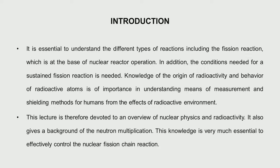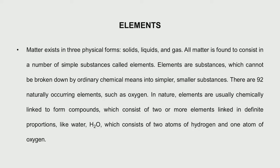All of us know that matter exists in three physical forms: solid, liquid, and gas. All matter consists of different substances called elements. For example, air contains oxygen and nitrogen — nitrogen is an element, oxygen is an element. Elements are substances which cannot be broken further into simpler substances. There are about 92 naturally occurring elements. You can combine two elements to form compounds — hydrogen and oxygen give water, carbon and oxygen give carbon dioxide.